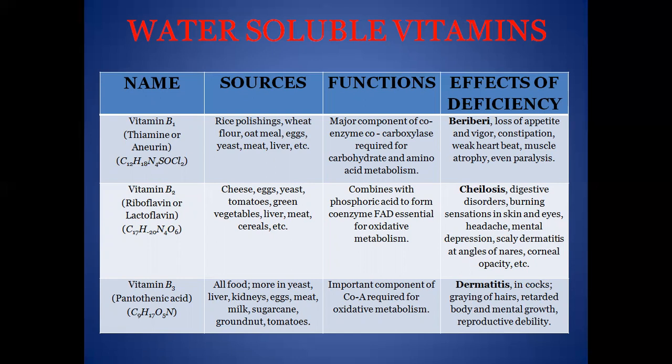Vitamin B3, pantothenic acid, is sourced from most foods, including yeast, sugarcane, milk, groundnut, and tomatoes. Its function is that it is an important component of coenzyme A, required for oxidative metabolism. The effect of its deficiency is graying of hair and retarded body and mental growth.